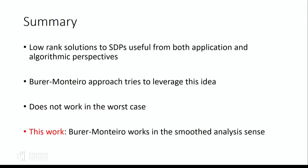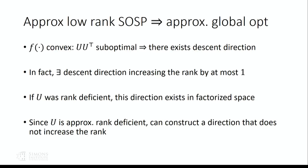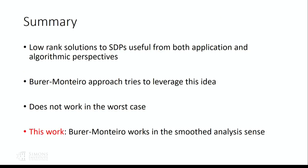Q: If there's a descent direction in the original parameter space, does it need to be symmetric? A: It will be symmetric because U U transpose is symmetric, and the descent direction moves within the PSD cone. The descent direction always stays in the PSD cone, so it will be symmetric.